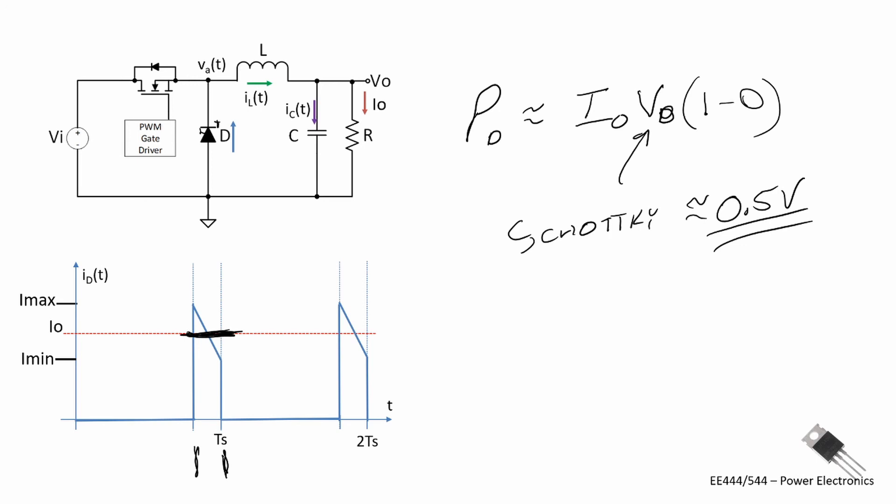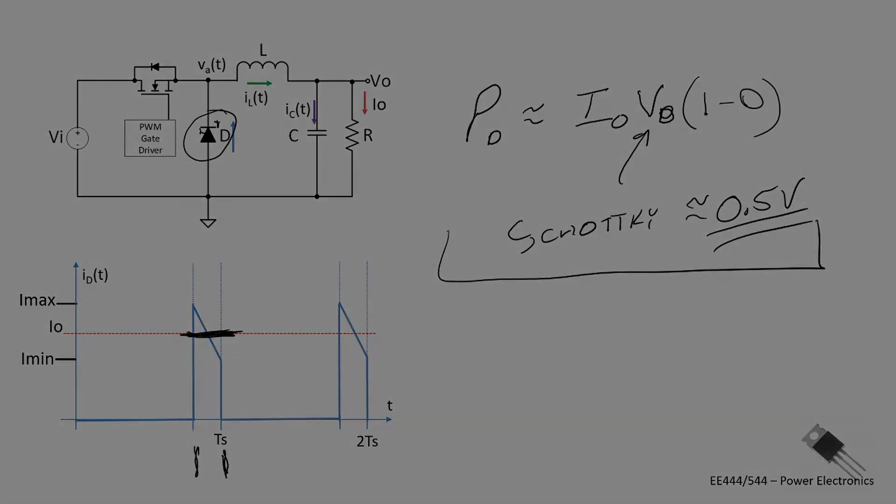I mentioned in a previous video that sometimes this diode is replaced by a MOSFET that is synchronized to the high gate switch MOSFET and they work in tandem. And that further reduces that loss. But for now, let's just assume we have a diode and possibly a Schottky diode.